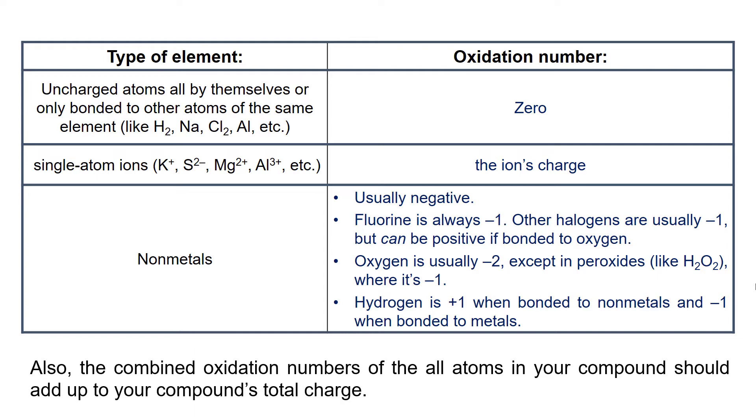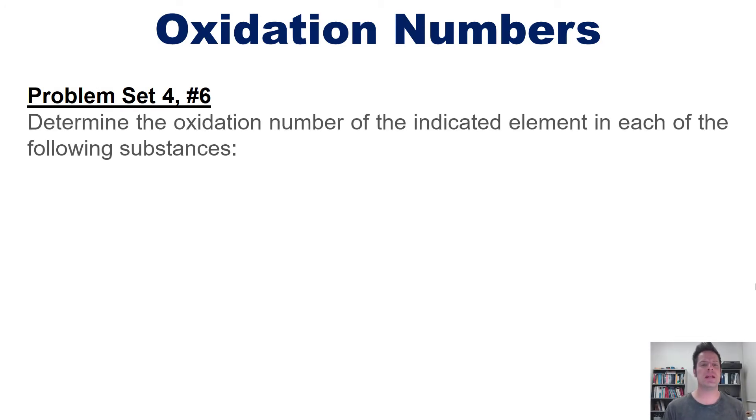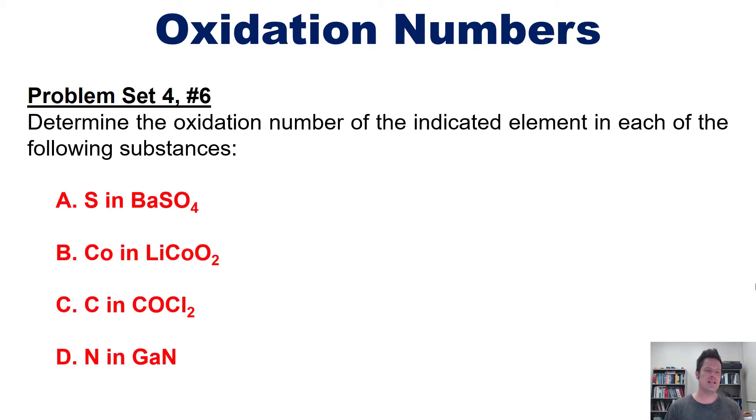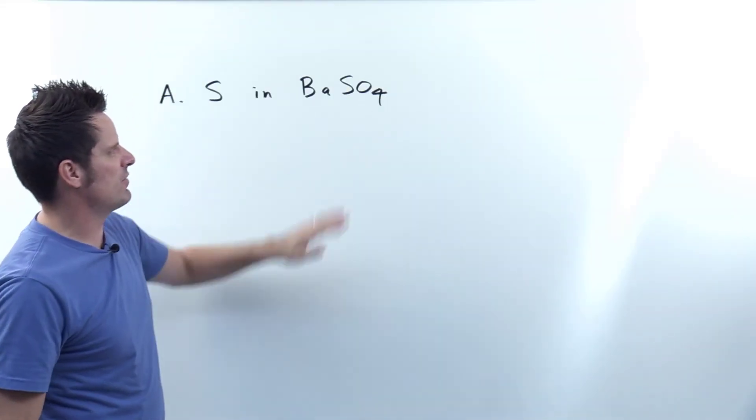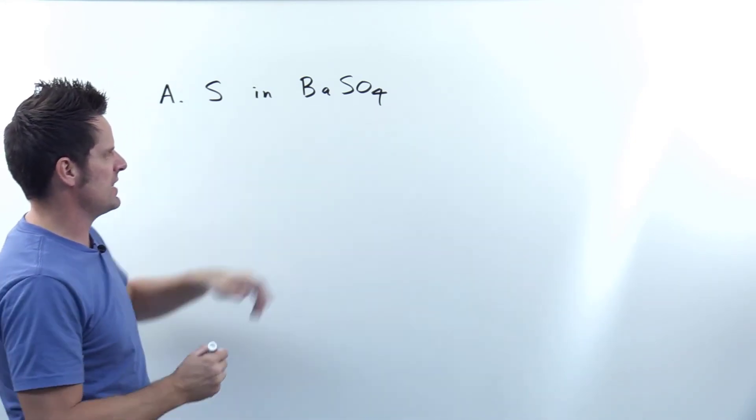Let's see if we can apply them to one of my problem sets for my university students. I want you to determine the oxidation number of the indicated element in each of the following substances. I'm not going to do all of them here, but I will show you how to do one or two of them on the board. In order to identify the oxidation number or state for sulfur in BaSO4, we need to pull things out and figure out charges of everything in the substance.